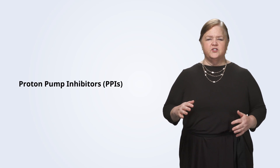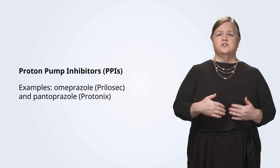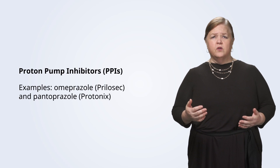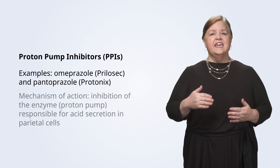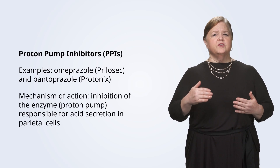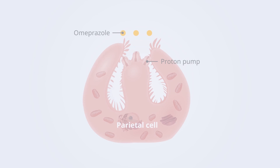Another way we can protect the stomach are proton pump inhibitors. These are like a master switch — they can shut off acid production at its source. PPIs such as omeprazole and pantoprazole inhibit the enzyme responsible for acid secretion in the parietal cells.